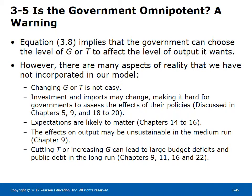Is the government omnipotent? A warning. Equation 3.8 implies the government can choose G or T to affect the level of output it wants. However, there are many aspects of reality not incorporated in our model. Changing G or T is not easy; investment and imports may change, making it hard to assess policy effects. Expectations are likely to matter. The effects on output may be unsustainable in the medium run. Cutting T or increasing G can lead to large budget deficits and public debt in the long run.